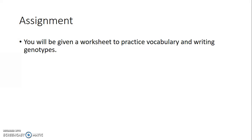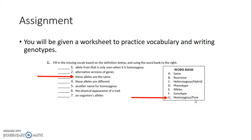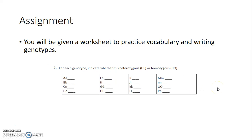Now some practice assignments. First, vocabulary matching using a word bank. For example, the question 'these alleles are the same' — same means homo, so we look for homozygous. The answer is homozygous, also called pure. Note that heterozygous means different, which can also be called hybrid.